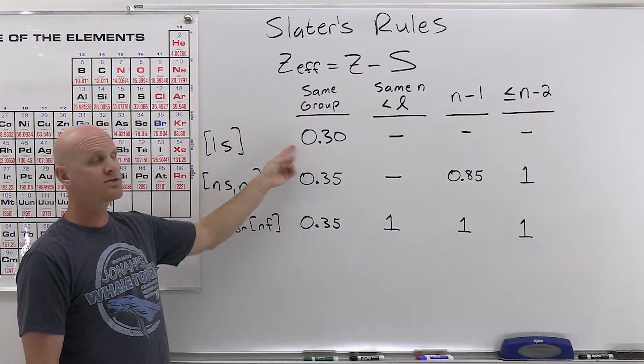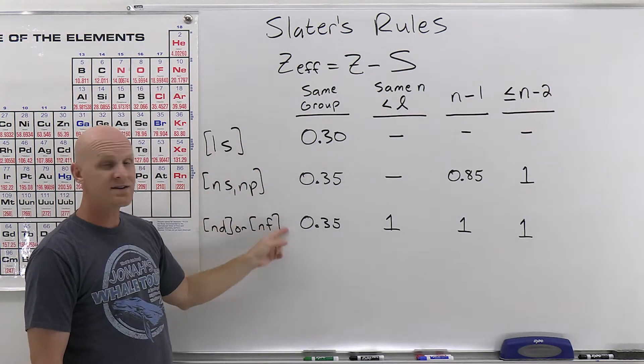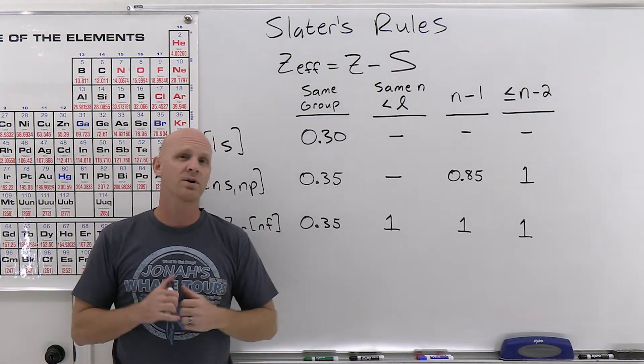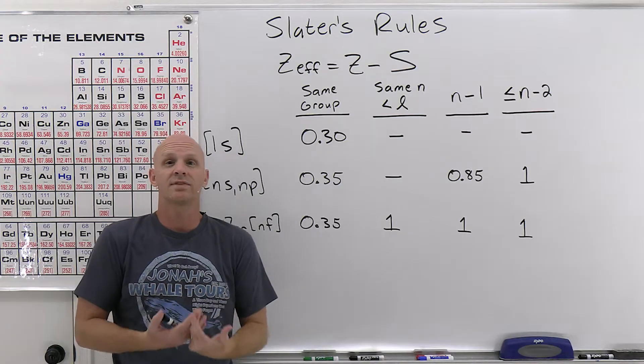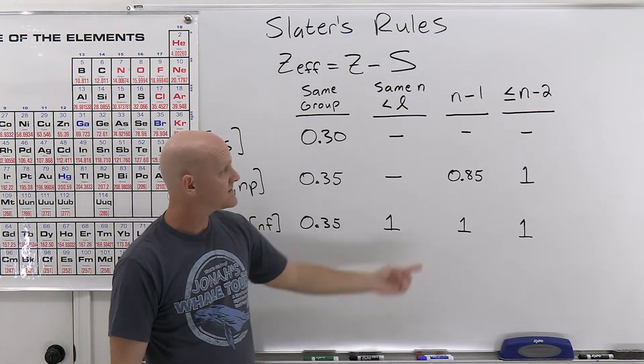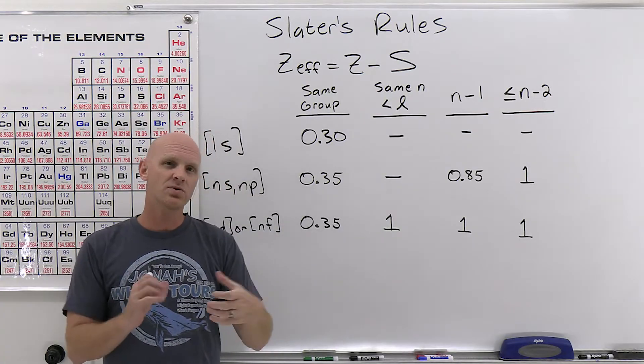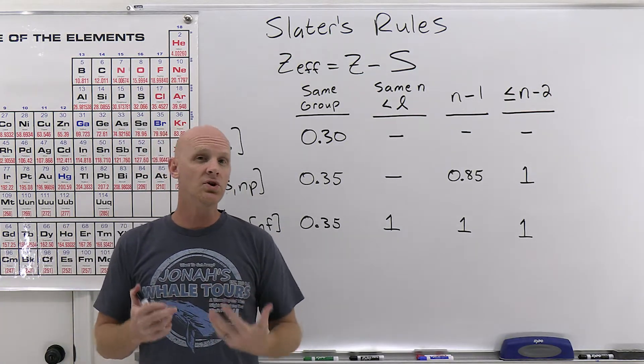He came up with some rules for screening values, and they don't actually equal zero in this case. We'll see some values, like for 1s electrons screening each other's 0.3, but for the rest is usually 0.35. Now it turns out we also said that all the core electrons are going to have essentially a screening value of 1, but that's not true either.